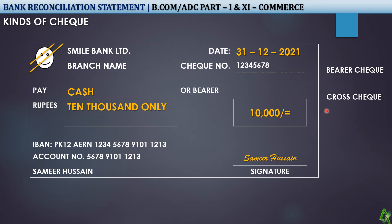So the cross check is a good thing because the transfer from one bank to the other takes 2-3 days to clear, which means if the check is misplaced, you can stop it on the spot. That is the advantage of a cross check.